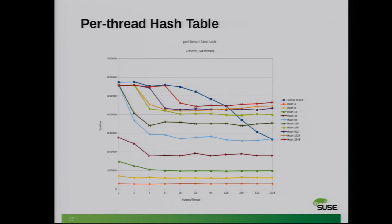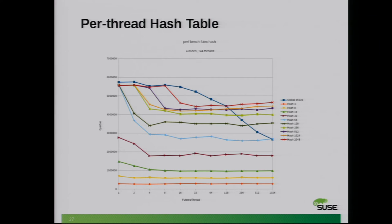Here are some numbers comparing what we have now — a global hash table — with per-process hash tables of different sizes. Similar to the previous graph, when you use lower thread counts, the global hash table really works because you're operating on fewer futexes and have fewer collisions. But at some point it starts going really down, and as you saw when you start operating on 10,024 threads, it just flatlines — which is the pattern shown by the blue line. The different hash sizes don't compare in performance to the per-process hash tables.